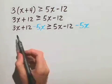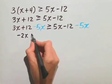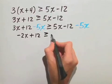So on the left hand side, we have negative 2x when we combine the like terms, plus 12 is greater than or equal to just negative 12.